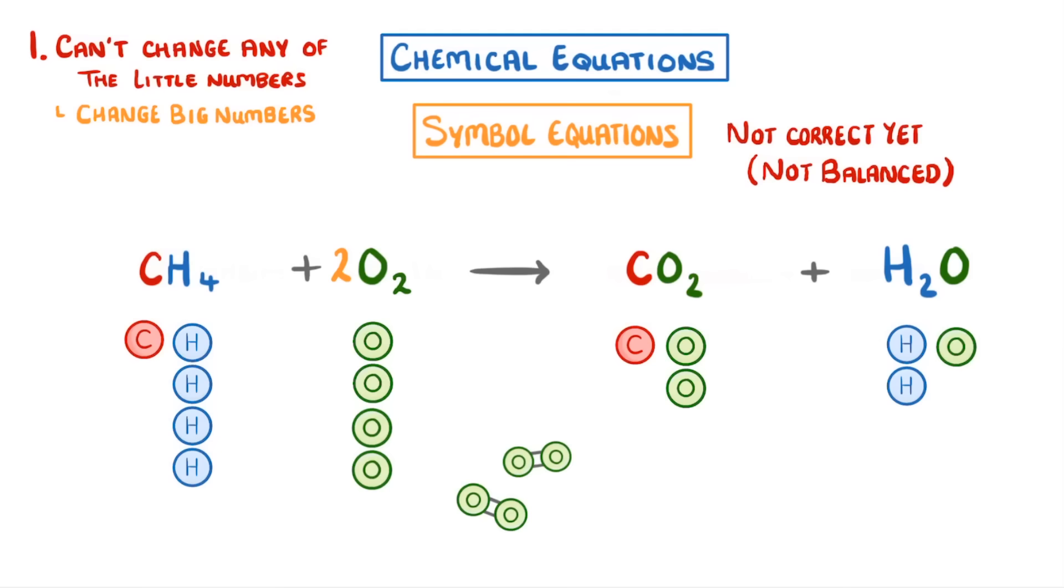This might seem a bit weird, as we only need 3 oxygen atoms to match the right-hand side. So shouldn't we just make it 1 and a half molecules of oxygen? Unfortunately, we can't. When balancing chemical equations, another rule is that we need to keep to whole numbers, and so we have to round up to 2 instead, and keep 4 oxygen atoms.